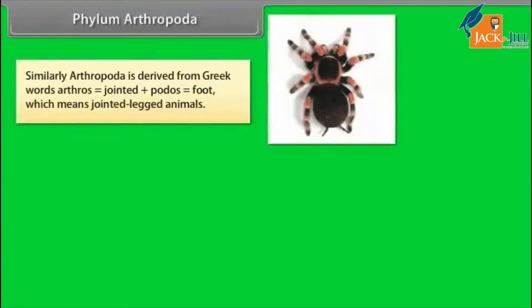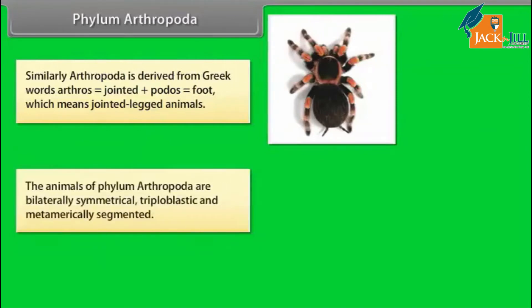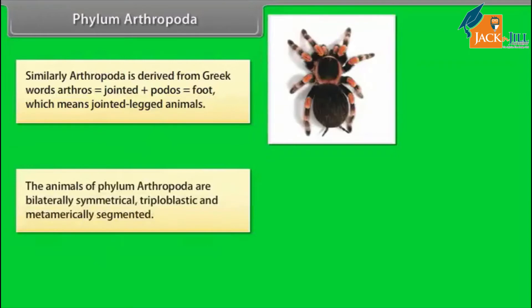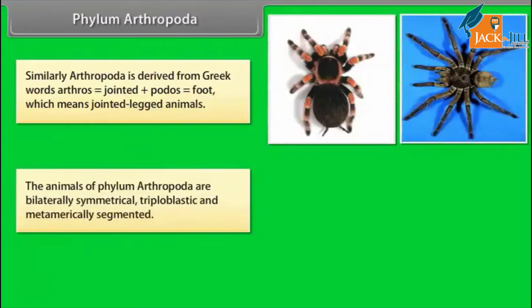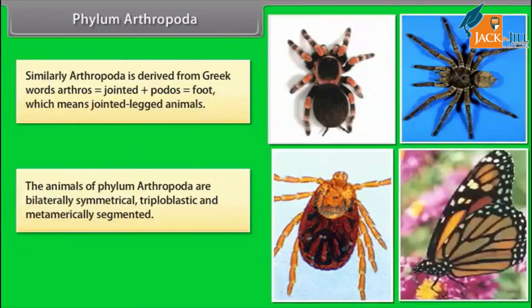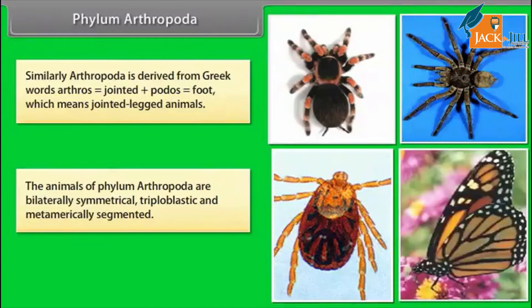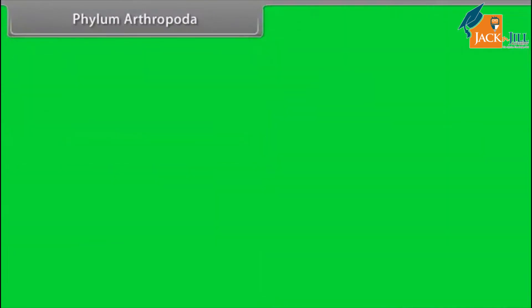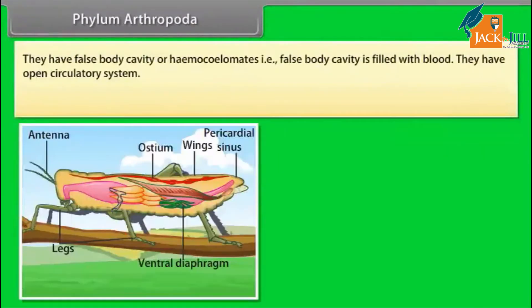Phylum Arthropoda. Arthropoda is derived from Greek words arthros, which means jointed, plus podos, which means foot — jointed-legged animals. The animals of Phylum Arthropoda are bilaterally symmetrical, triploblastic, and metamerically segmented. They have a false body cavity or haemocoelom, that is, false body cavities filled with blood.